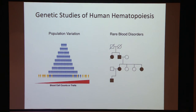In our group, we've been interested in trying to take two interrelated approaches to this problem. We've been interested in using population-based variation to try to understand how humans vary in blood cell production, and we've also been interested in trying to understand rare genetic blood disorders. I want to try to go through a vignette to describe each of these.